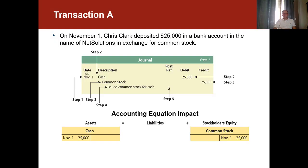Hello, everyone. In this part, we're going to start applying the transactions into the journal, or in other words, recording the transactions in the journal. The journal process or recording in the journal is called journalizing. We're going to apply the exact same transactions that we had in Chapter 1, but using the accounting language — using debit and credit. So we're going to journalize these transactions in the journal.